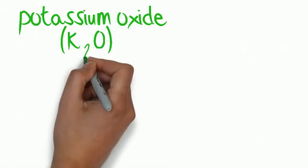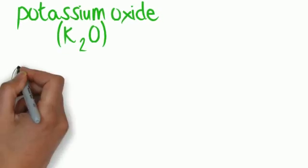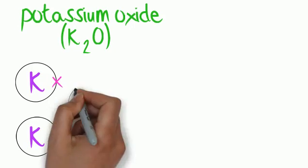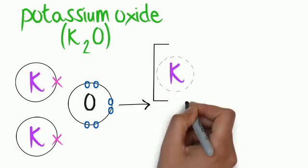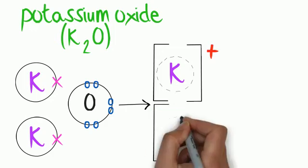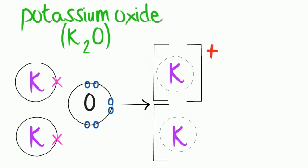In the example of potassium oxide, you can now understand why the formula is K₂O. Oxygen needs two electrons, but potassium has only one electron to give away. So we need two potassium atoms for every one oxygen, because the oxygen needs two electrons. Again, all the charges add up to zero because ionic compounds have no overall charge.